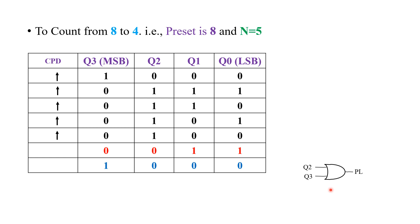A NOR gate is being used here. In any other combination of these two bits, the output of this NOR gate remains equal to 1 — that's the care we have to take. The only criteria is: only at this particular condition, the output of that gate or combination of gates must be equal to 0; in all other cases it must be equal to 1. That's being satisfied here. Q2 and Q3 are given to the NOR gate and the output will be given to the parallel load.